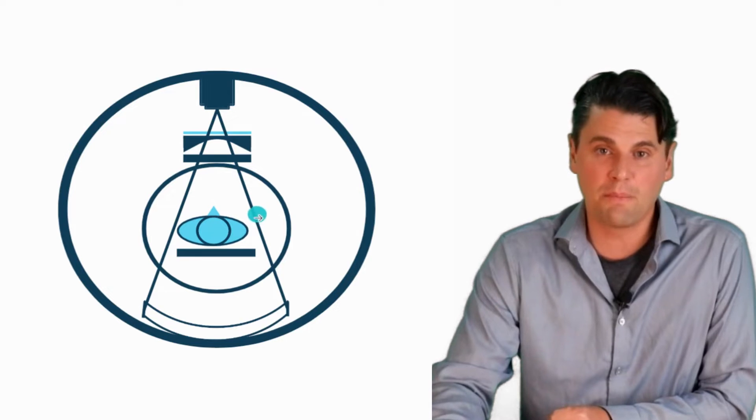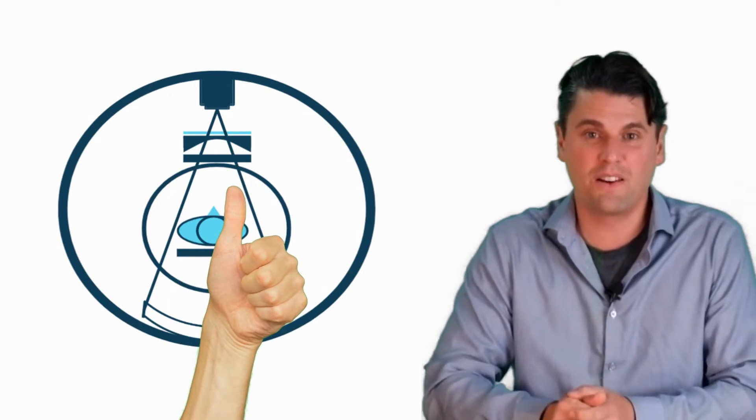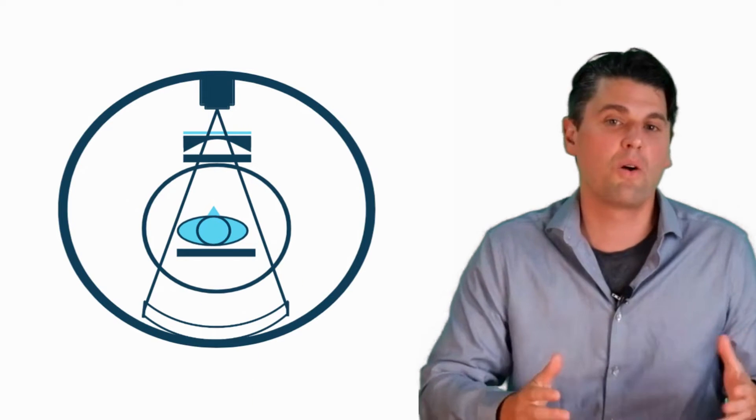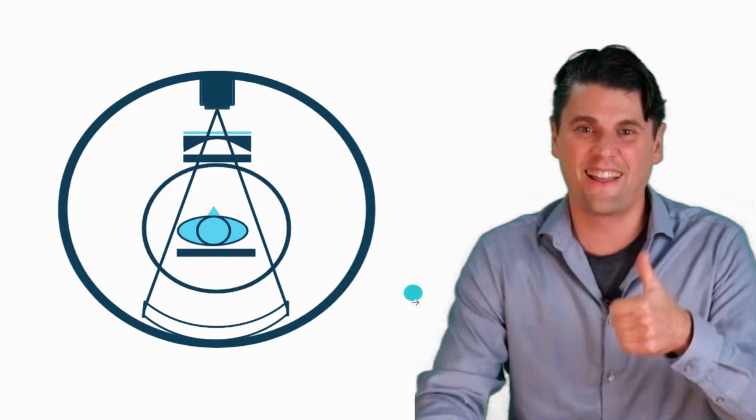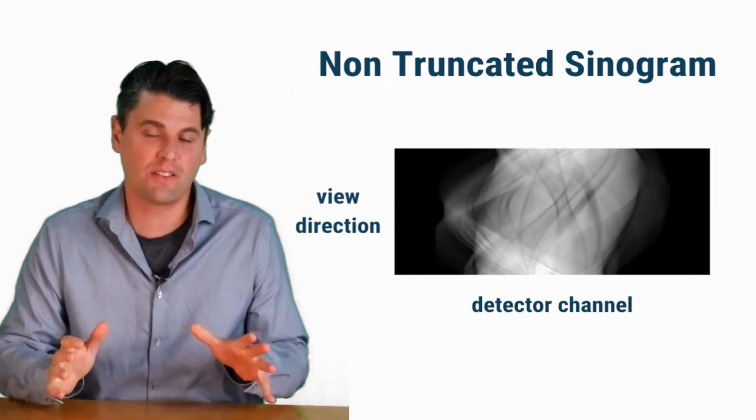In this scenario, the object actually fits within from all the x-ray views. Our object is going to fit within the x-ray field. So in this scenario, there's no data truncation. This is the good scenario, right? This is what our sinogram looks like. This is what the raw data looks like.